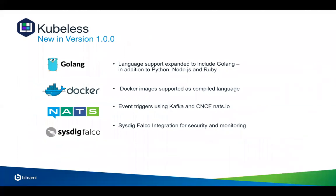At KubeCon we announced Kubeless 1.0.0. We announced support for Golang — that was a big thing. Most serverless solutions out there support interpreted languages like Python or Ruby, and Golang is our first supported compiled language. Since KubeCon we also landed a pull request to support Java — not JavaScript, Java — which is very exciting. All of this is the result of a ton of effort in refactoring. We can also support pure Docker images — what we call custom runtimes. Funnily enough, OpenFaaS functions can actually run in Kubeless as a custom runtime.